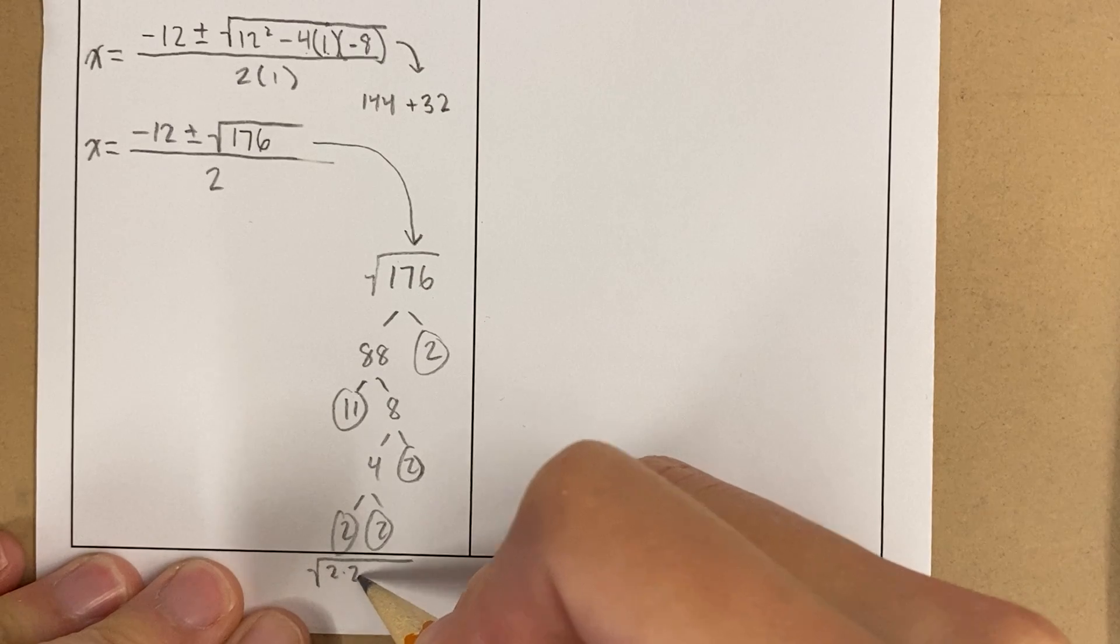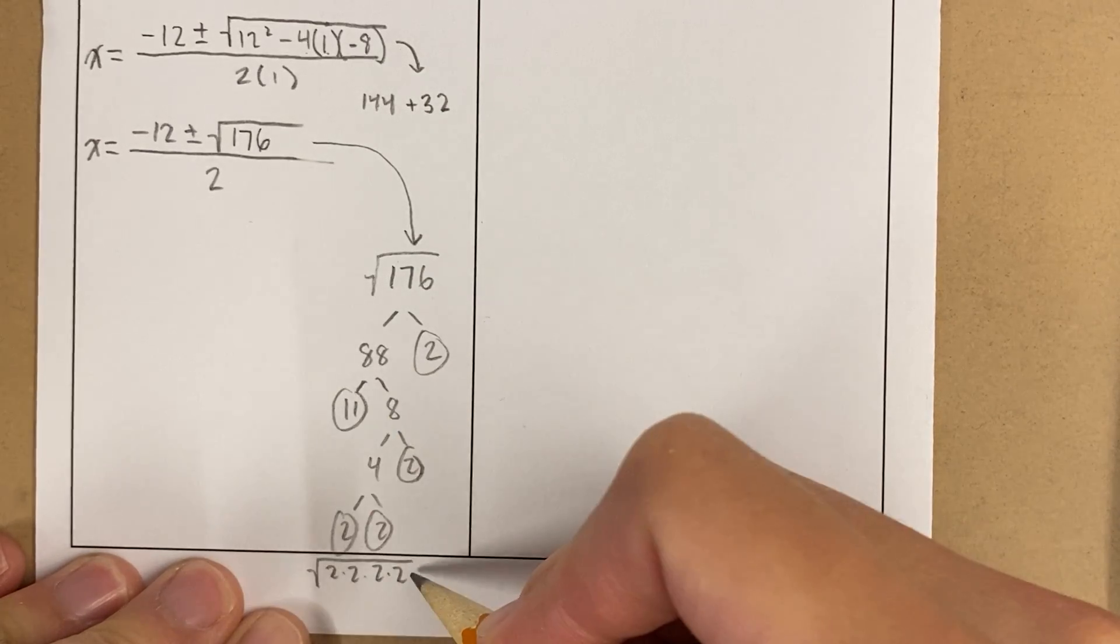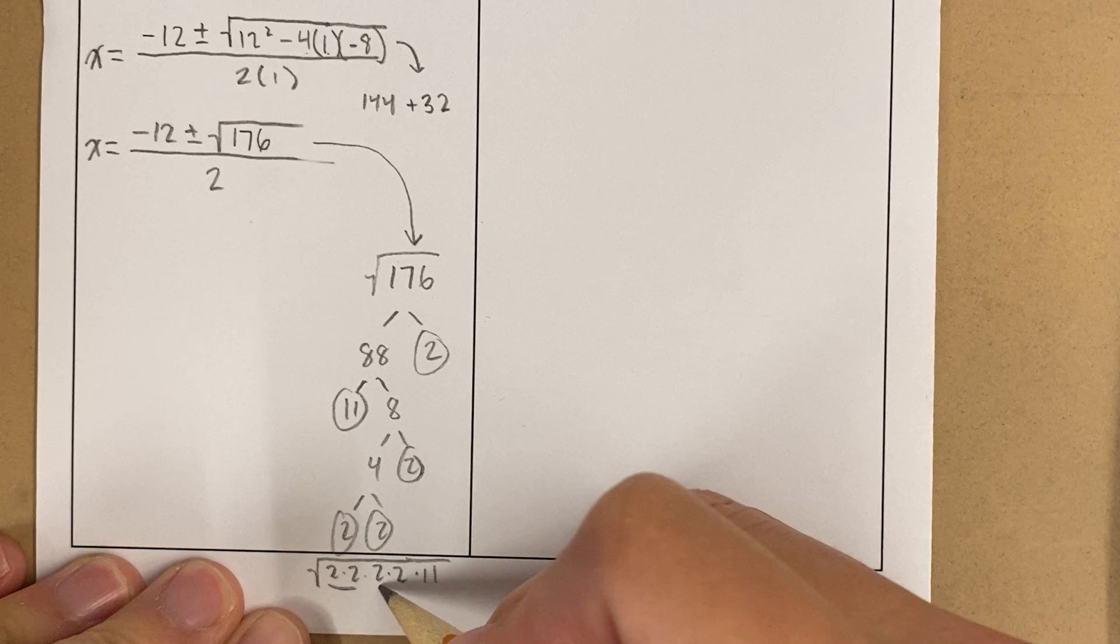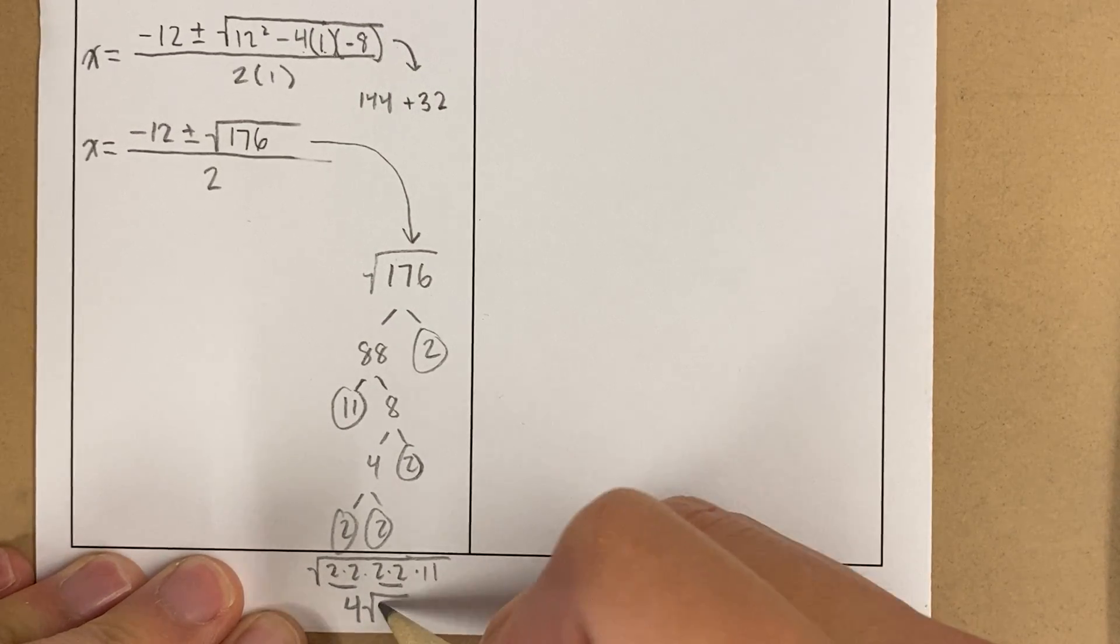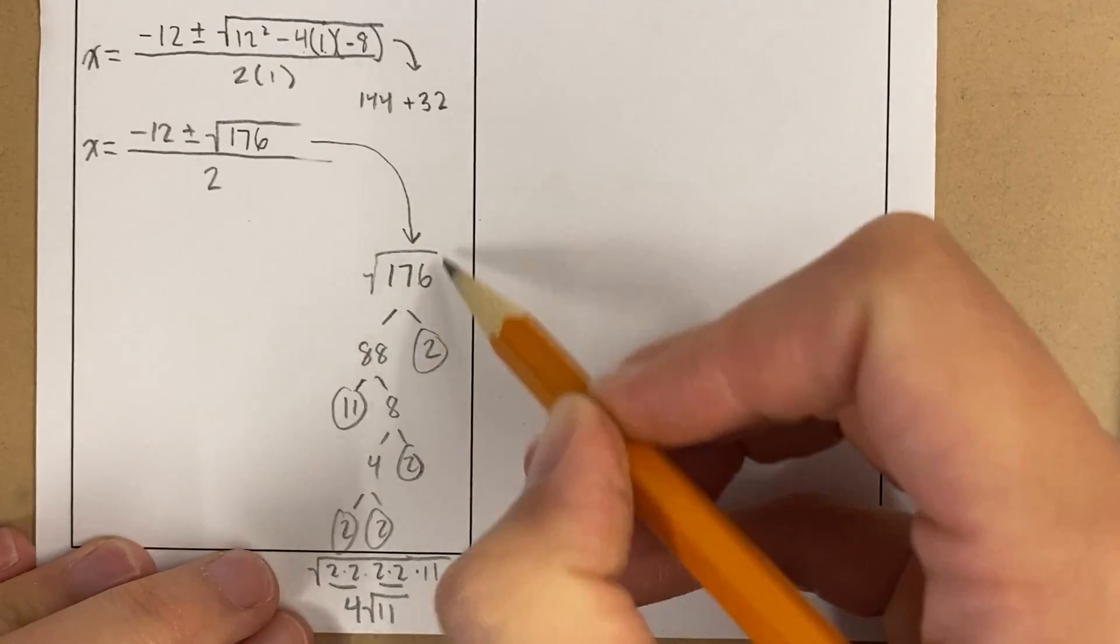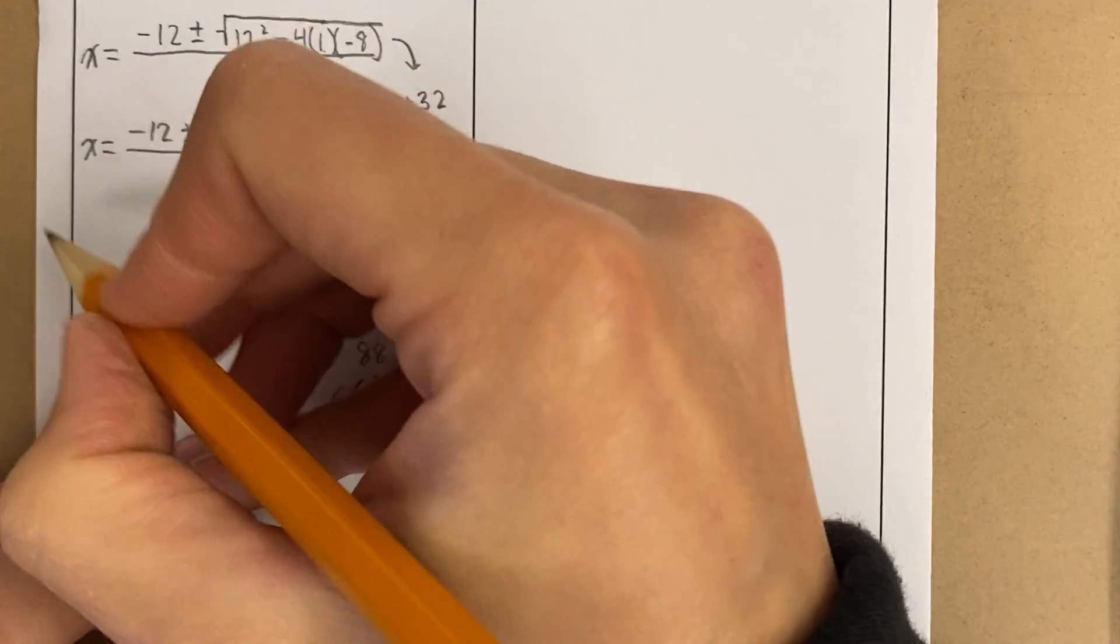So when I simplify 176, this becomes, right, there's 4 twos and an 11. So this becomes a double, so that becomes 2 times 2 on the outside. So this becomes 4 root 11. Okay, so this 176 is the same as 4 root 11.